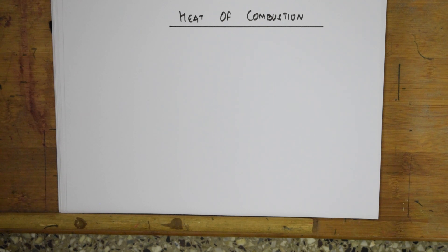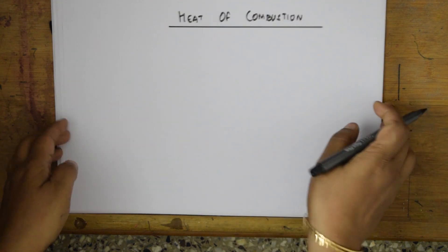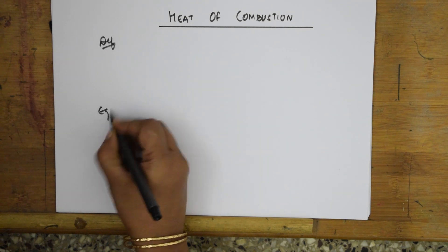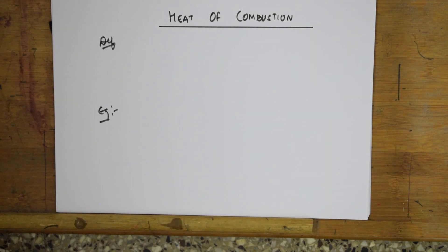So when do we call something is combusting? When you are burning that particular thing in the presence of oxygen. Directly I think I can write the definition. In my previous video I taught you different types of Enthalpy of Reaction students. Please watch the videos carefully, learn the definition as well as examples.